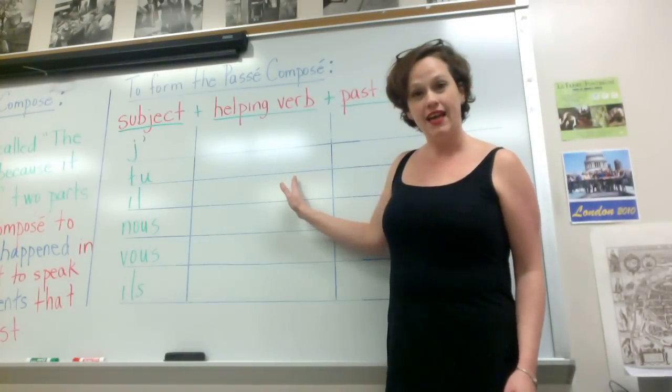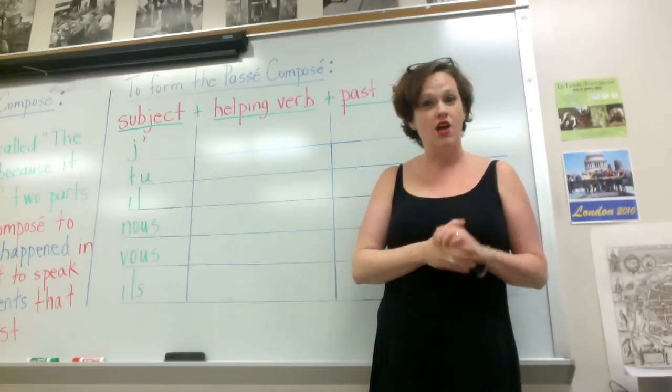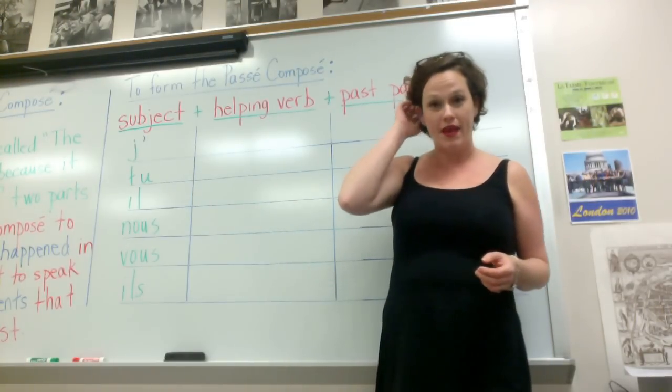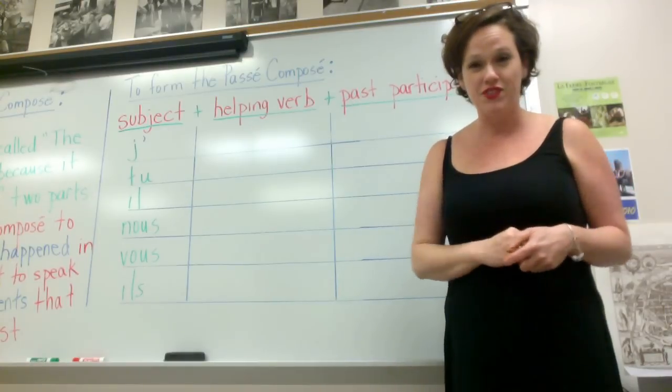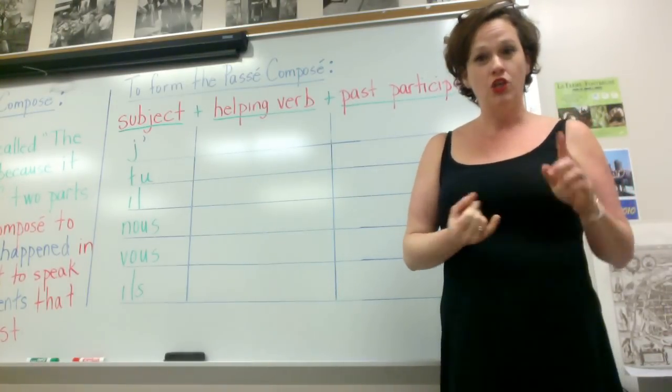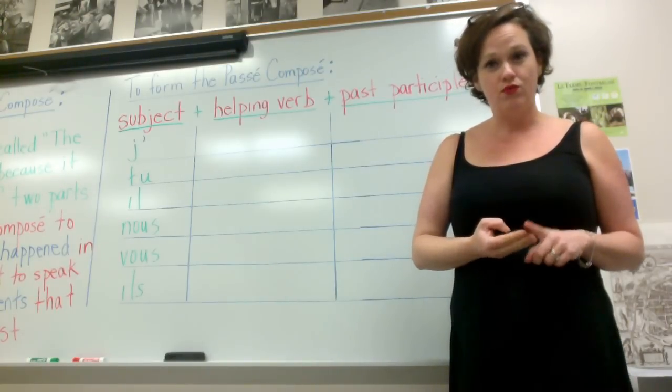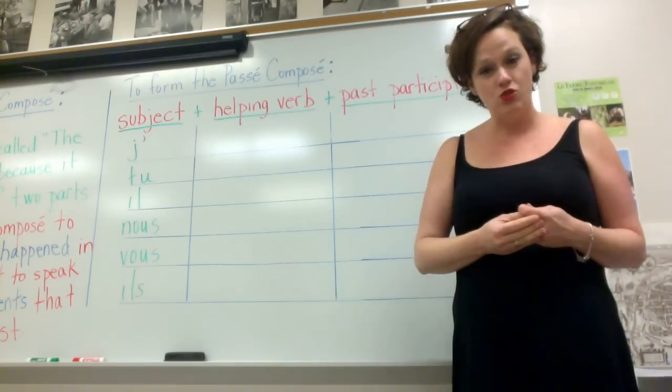After the subject, you need a helping verb. So regular verbs in the passé composé use the same helping verb, and that's the verb avoir, that you've certainly learned already. So the verb avoir: j'ai, tu as, il a, nous avons, vous avez, ils ont.